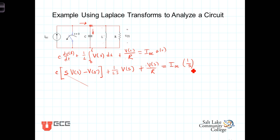So what we have here, then, is an algebraic expression in terms of this function of S, V of S. We've got S V of S here, we have 1 over L S times V of S, and we have 1 over R times V of S. So let's combine like terms, factor out the V of S, and when we do that, we are left with C times S.